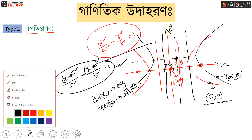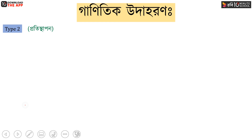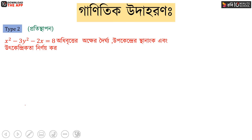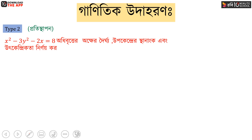As you can see the theory of the course, I will show you the mathematical example. So we have to say that x² - 3y² - 2x is equal to 8.